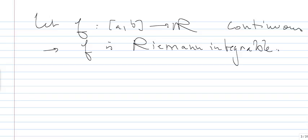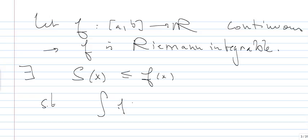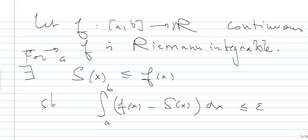What's going to happen is we are going to find a step function close to f. There exists a step function s such that the integral from a to b of |f(x) minus s(x)| dx will be as small as we want. In other words, for any epsilon positive, we can find such a function satisfying this.